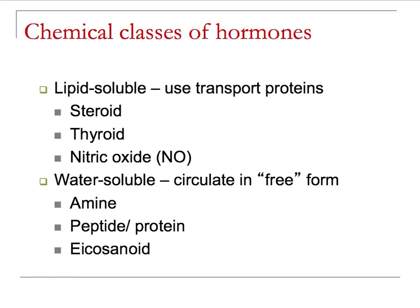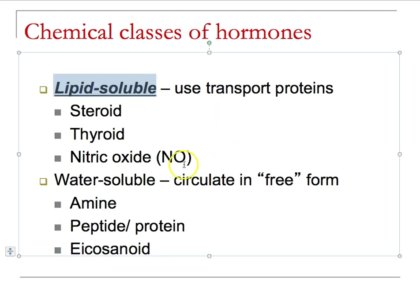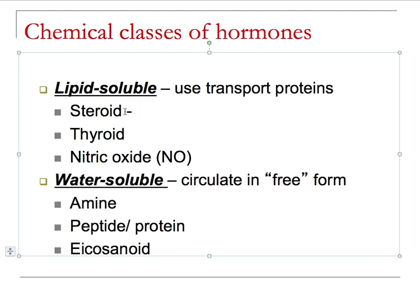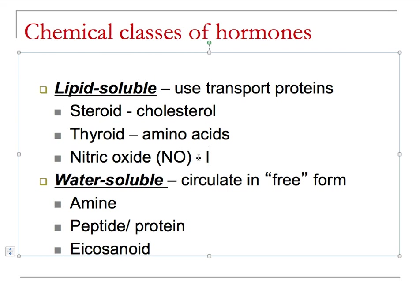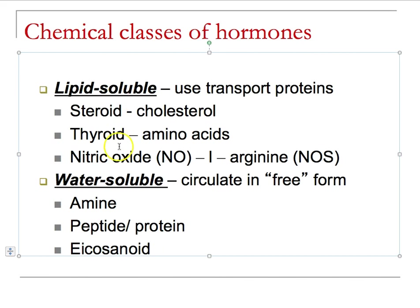Now we need to classify the hormones being made inside the body. It comes down to two basic classifications: they are either water-soluble or lipid-soluble. The lipid-soluble ones are steroid hormones, all made from cholesterol. Thyroid hormones are made inside the thyroid from amino acids. Nitric oxide — from A&P 1 — is derived from the amino acid L-arginine, converted into a gas by nitric oxide synthase (NOS). Nitric oxide was a neurotransmitter in A&P 1; now we're thinking of it as a lipid-soluble hormone.